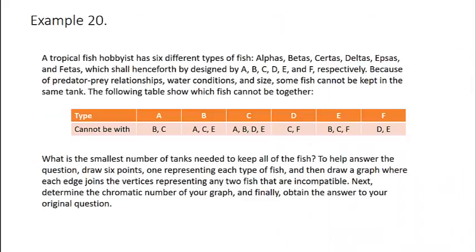Here's one final example. A tropical fish hobbyist has six different types of fish: Alphas, betas, certas, deltas, epsas, and fetas, which shall henceforth be designated by A, B, C, D, E, and F, respectively. Because of predator-prey relationships, water conditions, and size, some fish cannot be kept in the same tank. The following table shows which fish cannot be together.